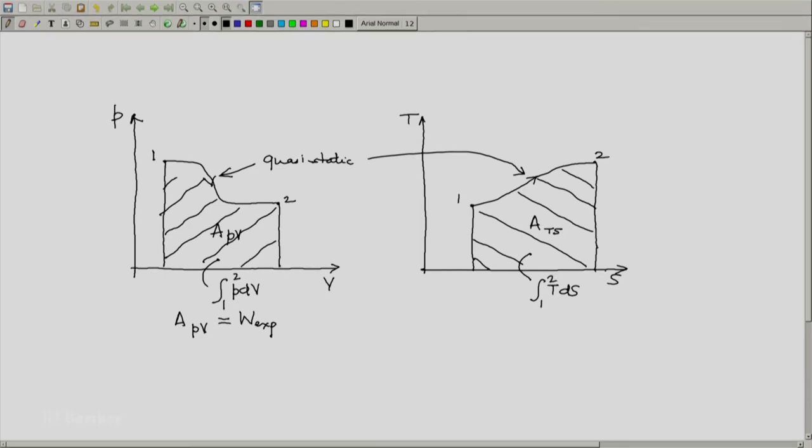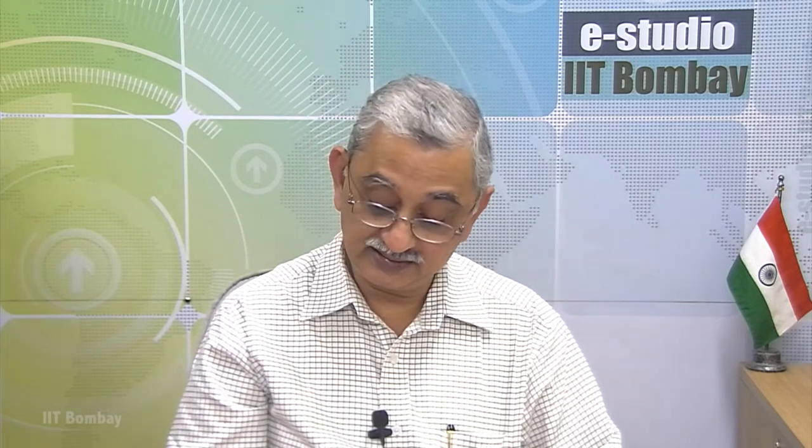What does second law say about this? Second law tells us that dS must be greater than or equal to dQ by T and hence T dS must be greater than or equal to dQ and hence the area under this curve ATS is greater than or equal to the heat transferred to the system during this process.